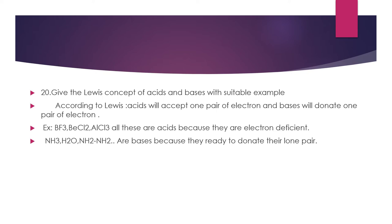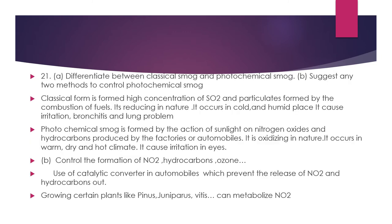Question 20: Give Lewis's concept of acids and bases with suitable examples. According to Lewis, acids accept one or more pairs of electrons and bases donate pairs of electrons. All electron-deficient compounds of groups 2 and 3 (like BF3) are Lewis acids because they are ready to accept electron pairs to complete their octet. All molecules containing lone pairs of electrons are Lewis bases as they can donate an electron pair.